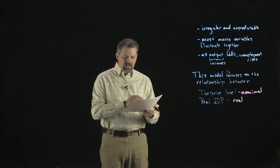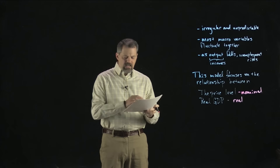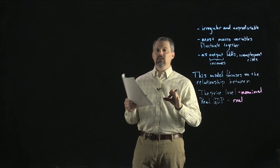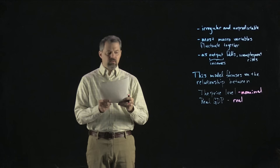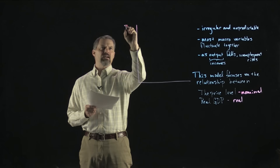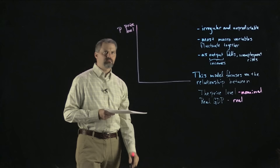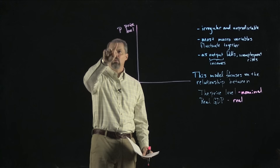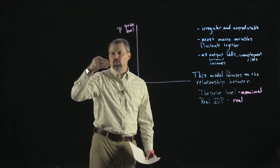Let's think about what the aggregate demand-aggregate supply model looks like, because it's going to look very familiar to you, but it works very differently. We put the price level on the vertical axis — sometimes I'll just call it P. I'll try to write 'price level' at the beginning because I don't want you to think it's just the price of one good. This is the average level of prices in the economy.